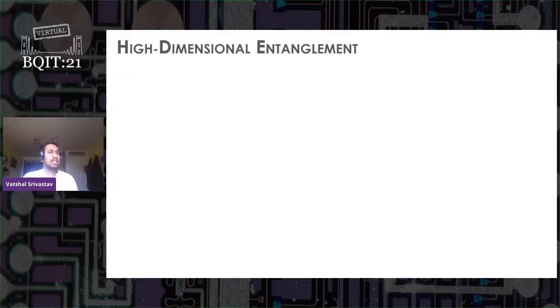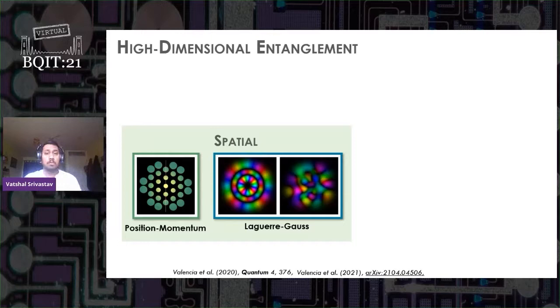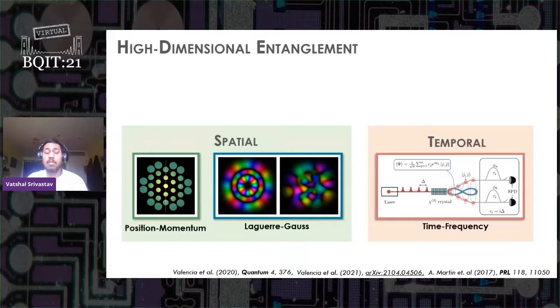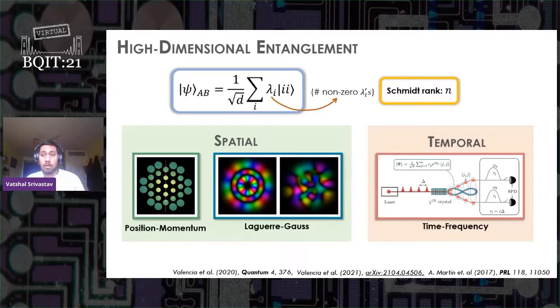We are familiar with the concept of entanglement as it refers to the quantum correlations that cannot be explained classically. Entanglement in more than just two levels is high dimensional entanglement. Photons are inherently high dimensional in nature, for example in their spatial degree of freedom, for instance position momentum of Laguerre-Gauss basis, as well as in their temporal degree of freedom, for example time and frequency. Any pure entangled state can be expressed in a Schmidt decomposition form, which is given here, where lambda is our Schmidt coefficients. One can characterize the dimensionality of entanglement through Schmidt rank n, which is the number of non-zero lambdas.